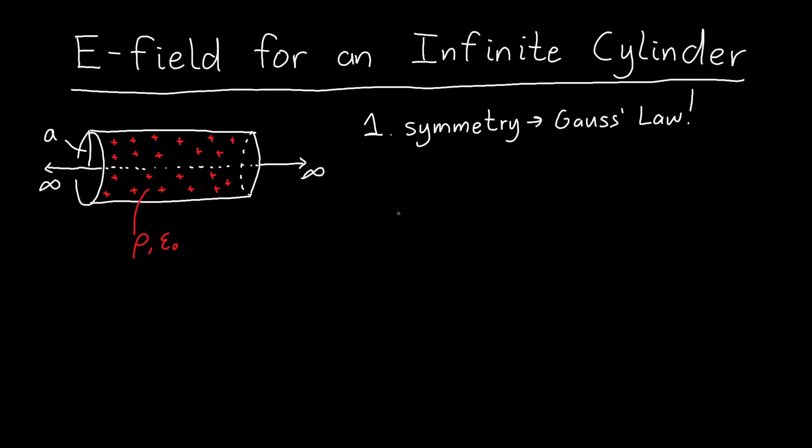So to apply Gauss's law we first need to pick a Gaussian surface, and I'm going to start with a Gaussian surface—let's delete some of this charge to make space for it—that has a smaller radius than my cylinder of charge, so I can figure out the electric field inside the cylinder.